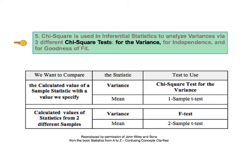Let's look at the chi-square test for the variance first. This test compares the variance from the sample data to a value for the variance which we specify — which could be a historical variance, a target, or a goal for the variance. The chi-square test for the variance answers the question: is there a statistically significant difference between the specified variance and the variance of the population or process from which we have the sample data? This test is analogous to the one-sample t-test which does a similar thing with means. If we wanted to compare variances of two samples from two different populations, we would use an f-test instead, which is analogous to the two-sample t-test.